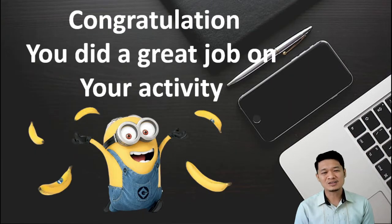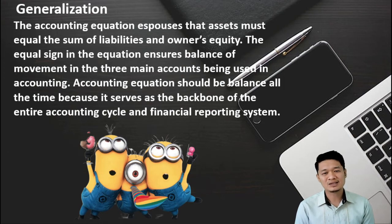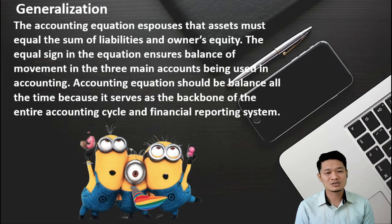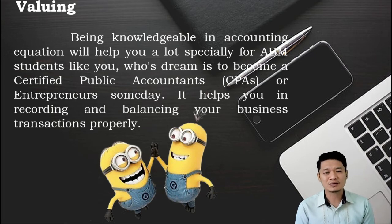Congratulations! You did a great job on your activity. The accounting equation states that assets must equal the sum of liabilities and owner's equity. The equal sign in the equation ensures balance of movement in the three main accounts used in accounting. The accounting equation should be balanced at all times because it serves as the backbone of the entire accounting cycle and financial reporting system. Being knowledgeable in the accounting equation will help you a lot, especially for ABM students whose dream is to become a certified public accountant or entrepreneur someday. It helps you in recording and balancing your business transactions properly.